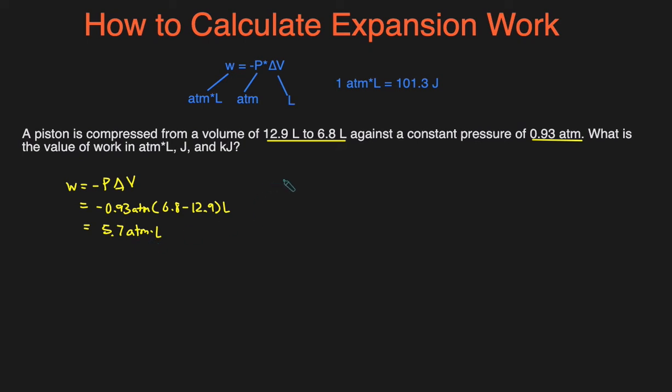To convert that to joules, we take the 5.7 atm·L and multiply by the conversion factor, which is 101.3 joules over 1 atm·L. Then the atm·L cancel out.